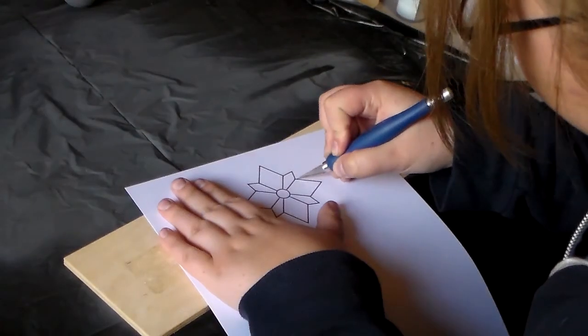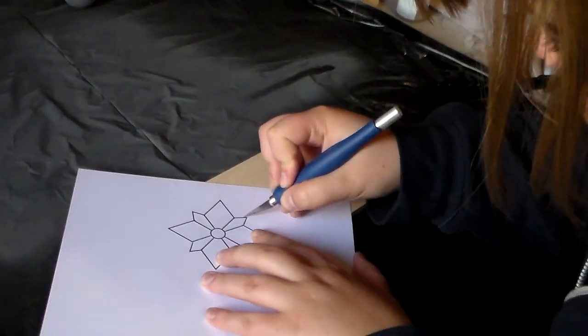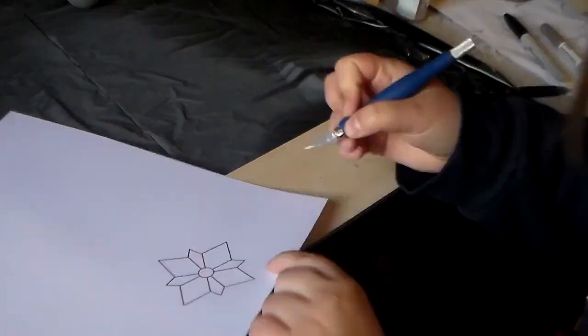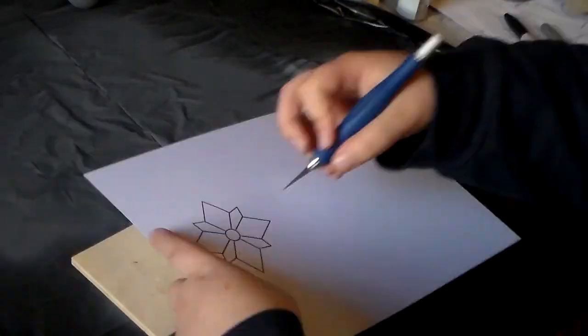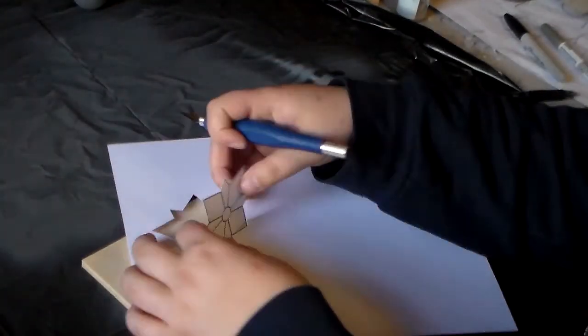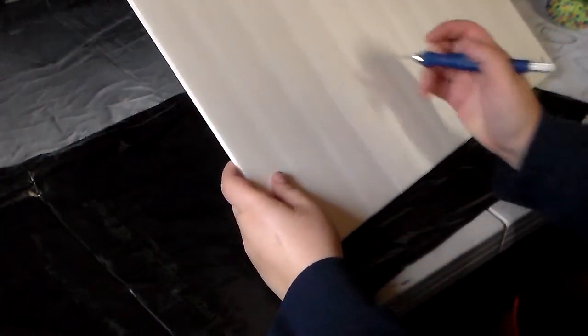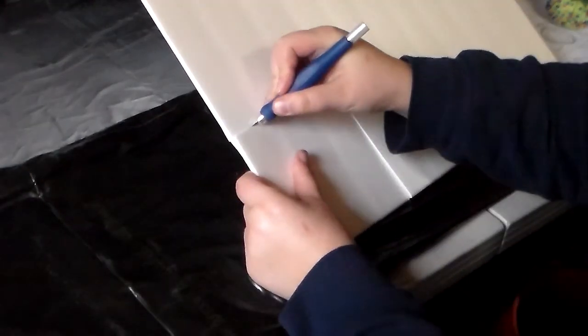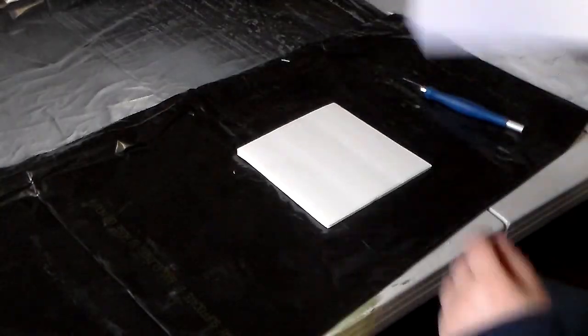To make the snowflake ornament, print out the pattern provided in the link down below onto some paper or card stock and cut out the shape along the outside edge with the cutting tool. Cut out a square of the foam presentation board and use the cutout pattern as a stencil on the board. Then use the stencil to draw on the lines.